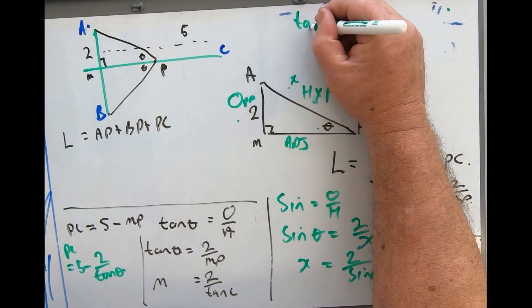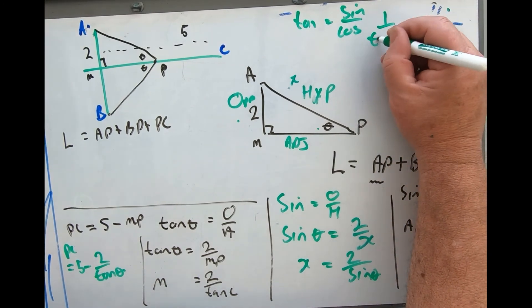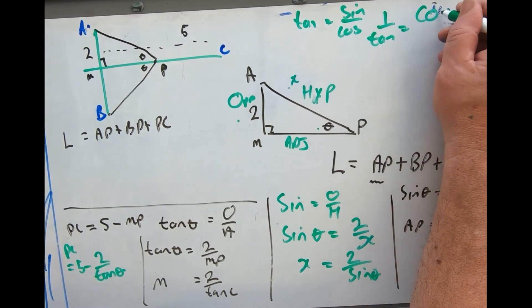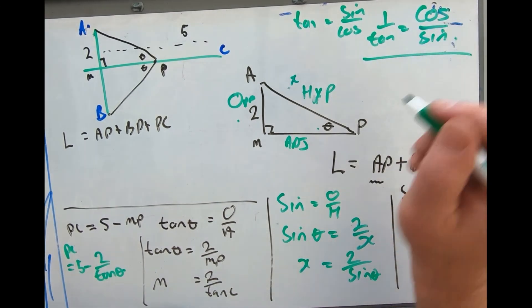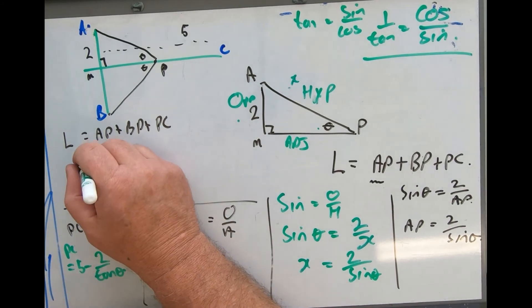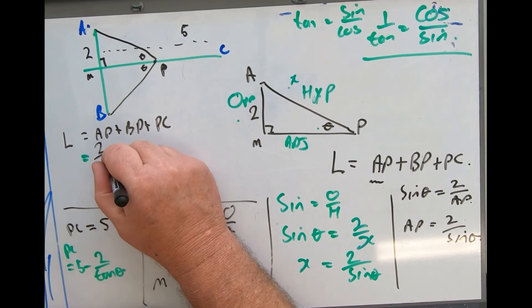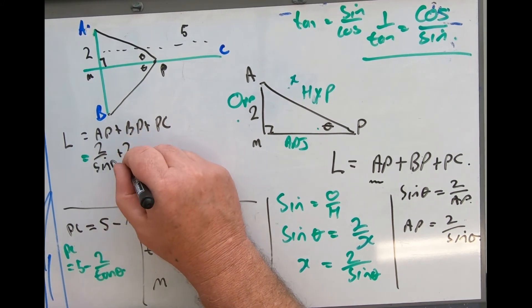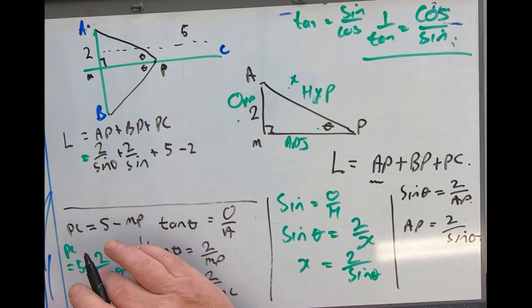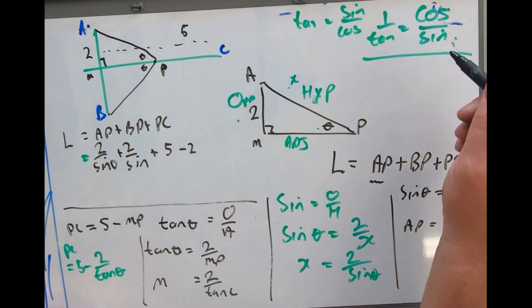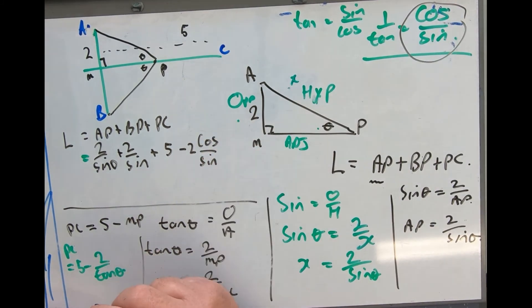Tan equals sine over cos, so 1 over tan equals cos over sine. Here's my answer: this one before plus this one before plus 5 subtract 2 times. Instead of writing 1 over tan, I'm going to use cos over sine because that's what's in the question.